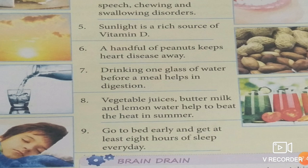Exercise, meditation, and right breathing improve concentration. Bananas boost brain power and reduce itchy mosquito bites. White flour and cheese are brain blockers. Poor dental health causes speech, chewing, and swallowing disorders. Sunlight is a rich source of vitamin D. A handful of peanuts keeps heart disease away. Drinking one glass of water before a meal helps digestion. Vegetable juices, buttermilk, and lemon water help beat the heat in summer. Go to bed early and get at least eight hours of sleep every day.